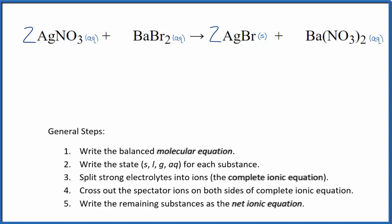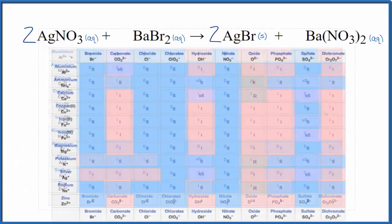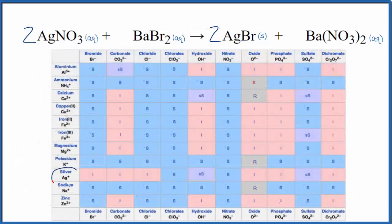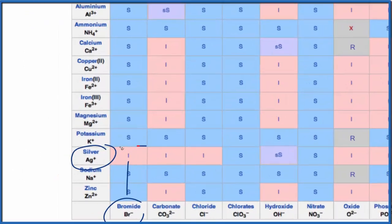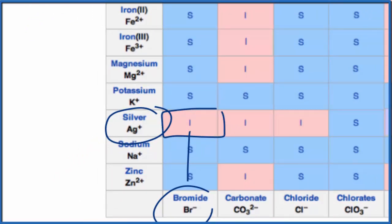We're looking for silver bromide, AgBr. So we find silver right here, Ag+, and then bromine right here. We go up - I means it's insoluble. So the silver bromide is going to be a solid, it'll be a precipitate and fall to the bottom of the test tube when these substances react.